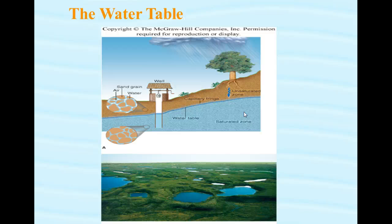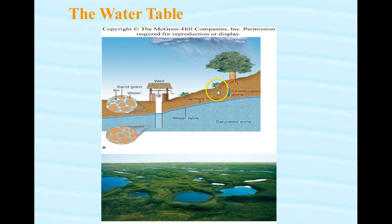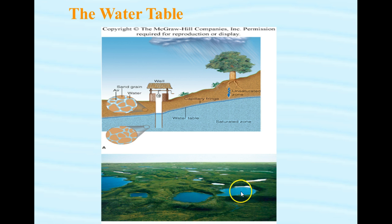Above the water table is an unsaturated zone — an unsaturated region called the Vadose zone, V-A-D-O-S-E. This area of unsaturated rock and soil above the water table is the Vadose zone. You can see some pictures of the water table here — these little ponds are sitting right at the water table in this local area.